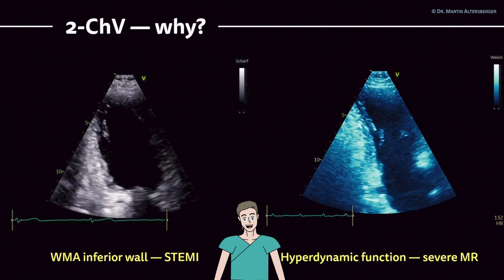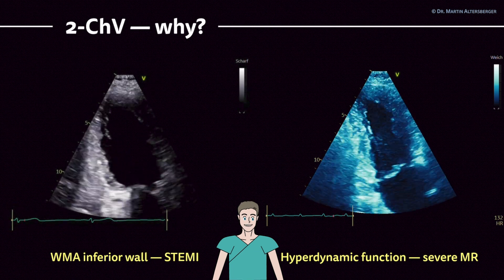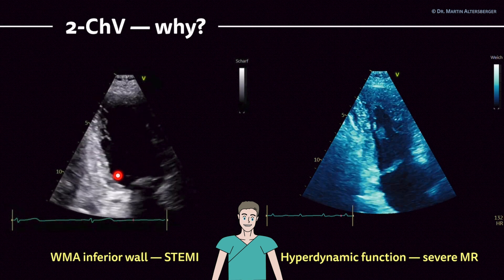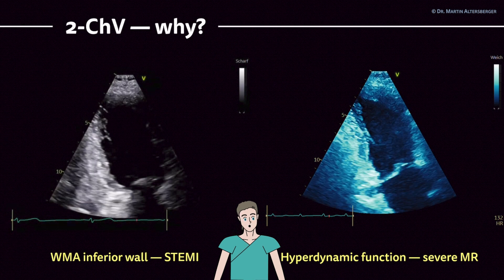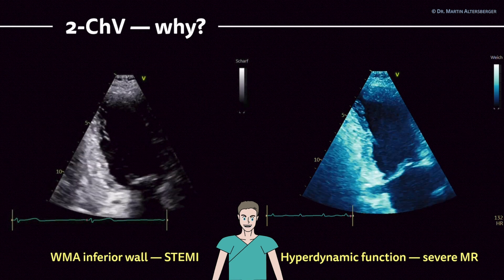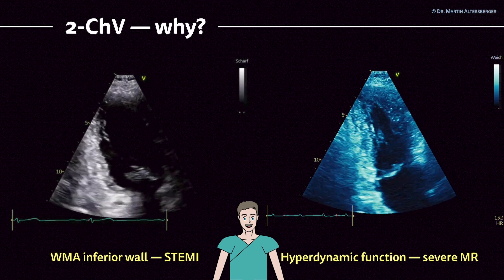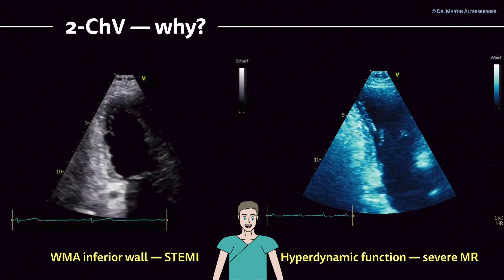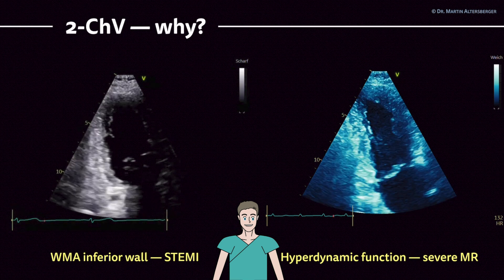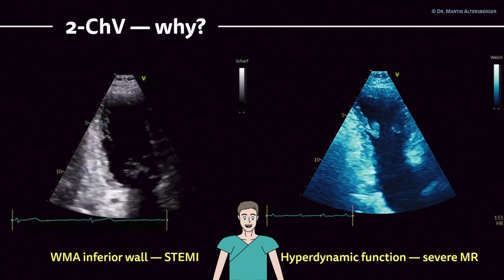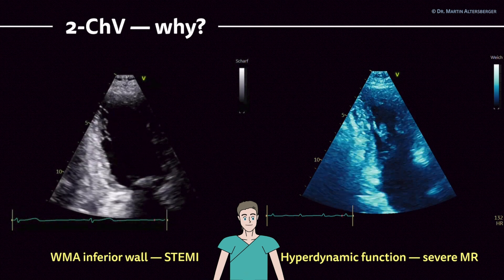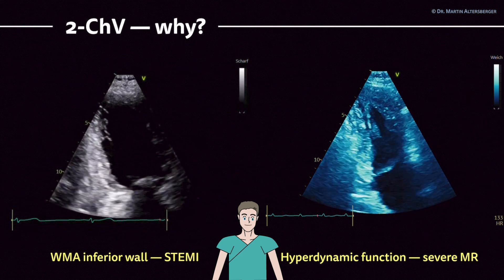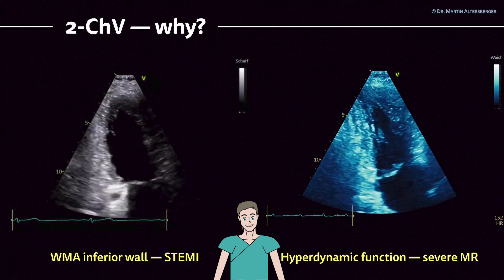In this case, we have an inferolateral STEMI patient. We do see akinesia of those segments — normal contraction here, but here it is truly akinetic, so there is no movement. There is also thinning of the wall, so this is probably already scarring of the left ventricle. On the right-hand side, we see a hyperdynamic left ventricular function. There is severe mitral regurgitation present and atrial fibrillation, with the hyperdynamic function also pointing towards the severity of the mitral regurgitation.